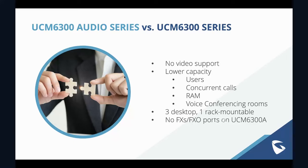One cool thing is that we have one device in this series — the 6300A — that does not have any FXS or FXO ports. I believe it's the first UCM we've made like that, which allows the price point of the 6300A to be even lower than you might expect. So the main differences between the 6300 series and the 6300 Audio Series are: no video support, slightly lower capacity, some differences in desktop versus rack mountable configurations, and no FXS or FXO ports on the 6300A.